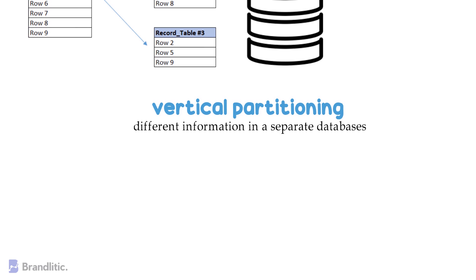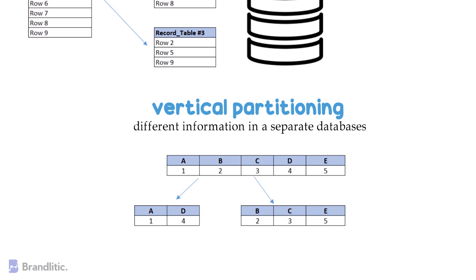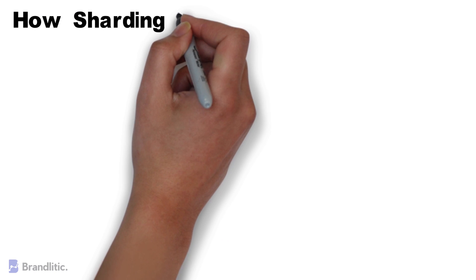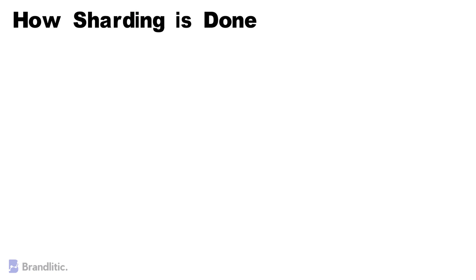vertically with different information in separate databases. To touch upon vertical partitioning, it involves drawing a logical split within an application's data and is often done at the application level with a piece of code routing commands to a designated database. Next, let's discuss how sharding is actually done. Well, the details of how sharding is implemented get very technical, but still,